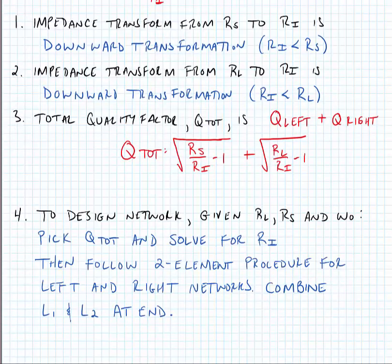To design our network, given a load resistance, a source resistance, and a resonance frequency, we can pick the total quality factor and solve for the intermediate impedance that achieves that quality factor. Then we follow a two-element procedure for the left and right networks as we learned in the previous lecture. At the end, we can combine L1 and L2 by adding them in series.